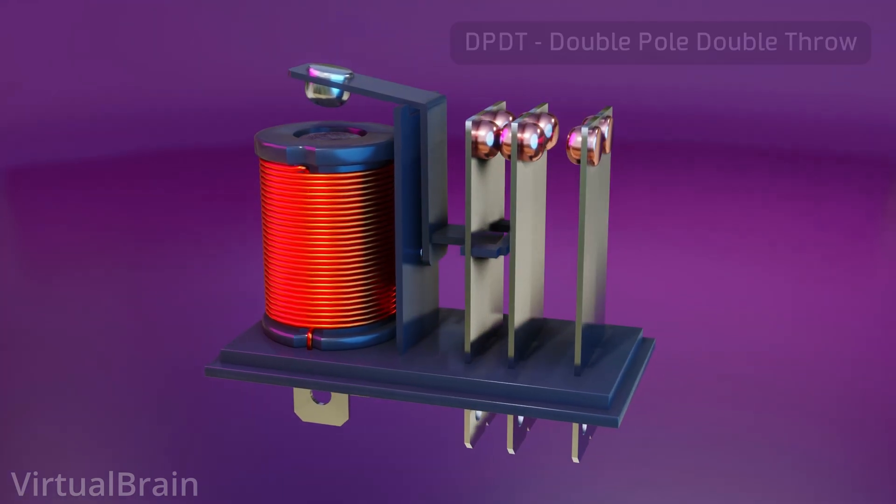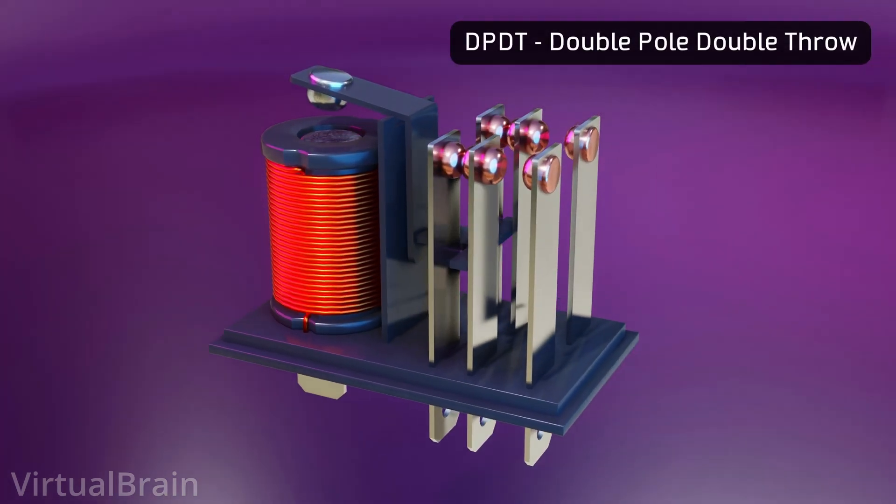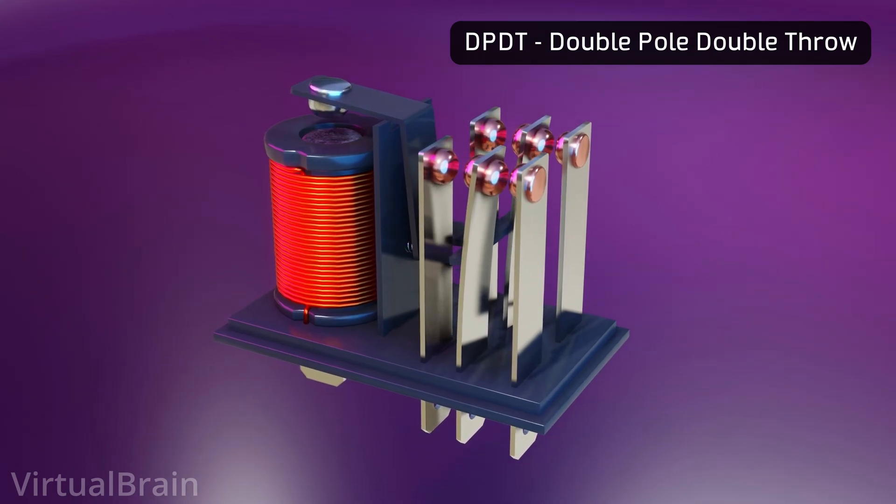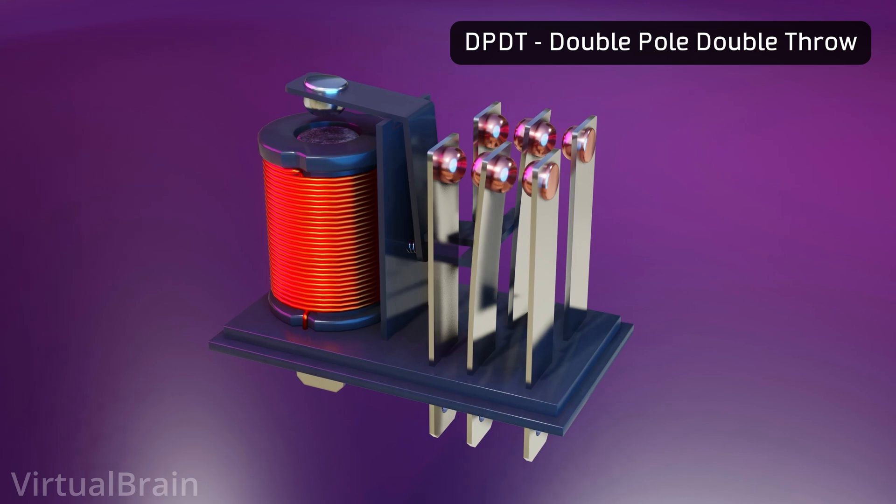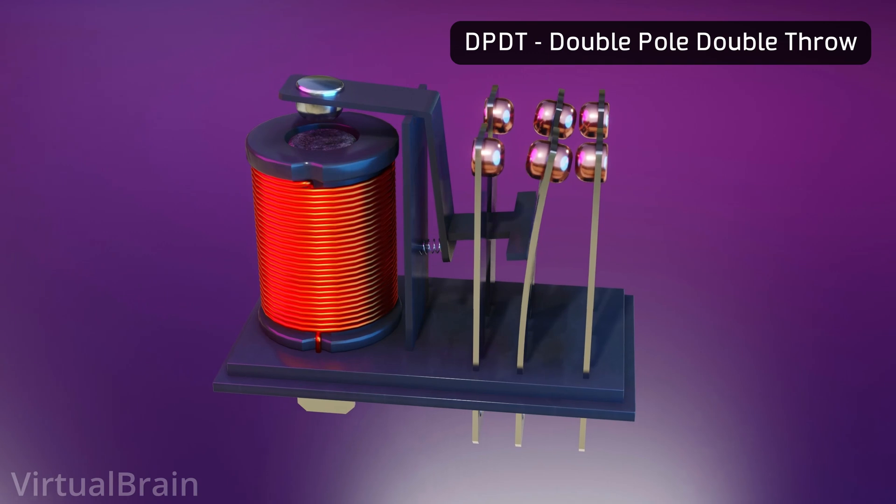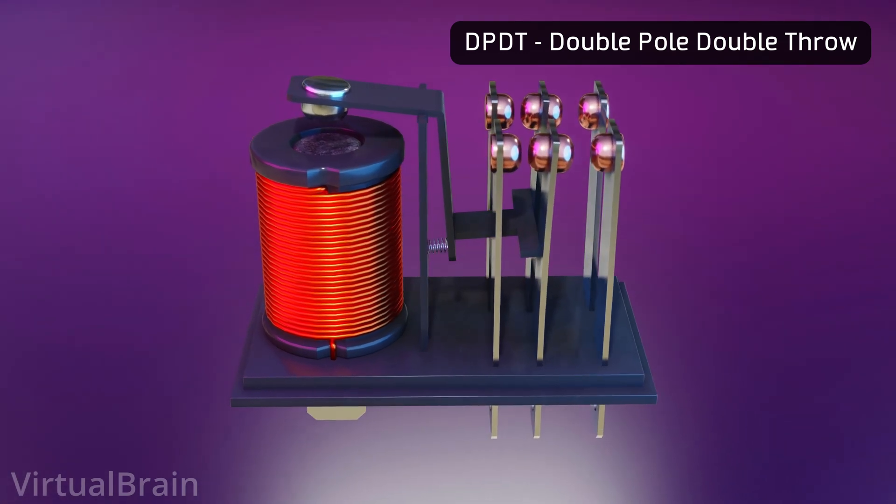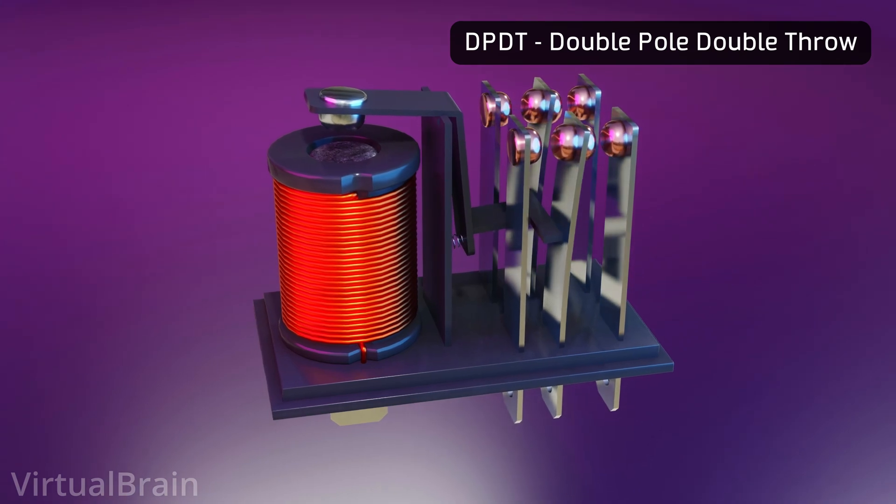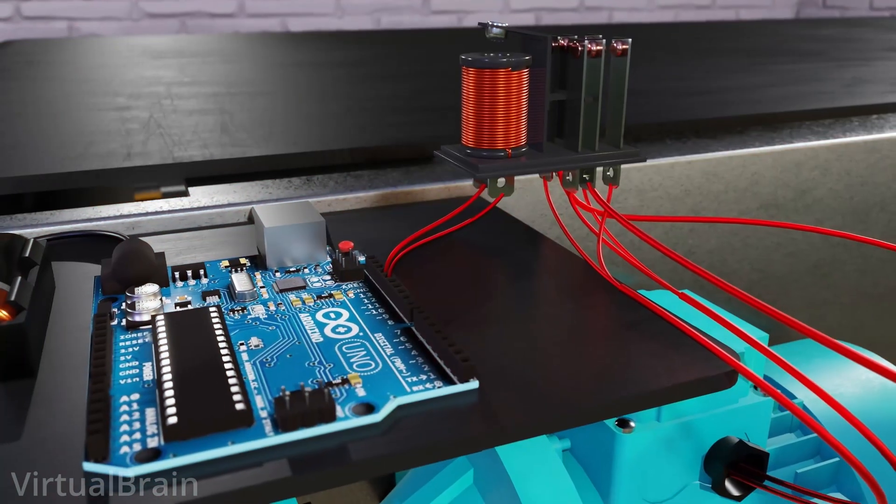On the other hand, if we switch from a single pole relay to a double pole relay, it would be equivalent to having two equal relays being activated simultaneously by the same input signal on the electromagnet, resulting in something like this. In this case it would be a double pole double throw relay. Here the possible applications might not be so obvious, but an example would be to allow changing the direction of rotation of the motor.